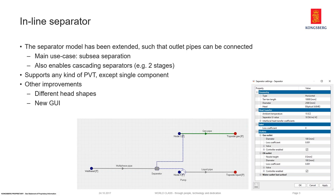You can have one, two, or three pipes for a three-phase separator connected to it, and you can choose which pipes you want to simulate. For instance, you could just look at what happens to the liquid coming out of your separator in terms of boosting, and then add a pipe to the gas outlet later on. So it can evolve during the field life or during the study. The solution for the inline separator still supports any kind of PVT — PVT tables from OLGA, black oil PVT useful for well modeling, and fully compositional runs with MultiFlash. The only PVT we don't support is single components like CO2 and steam.